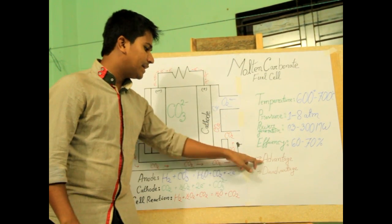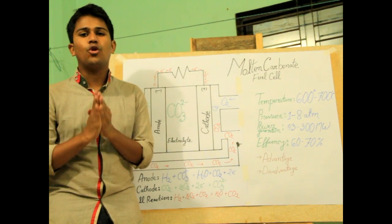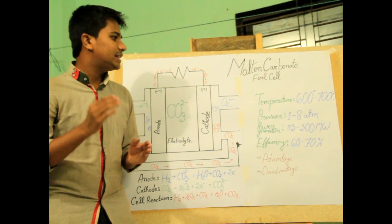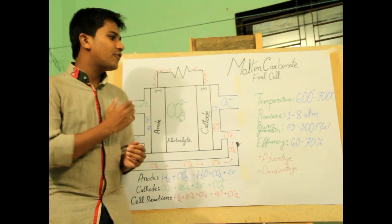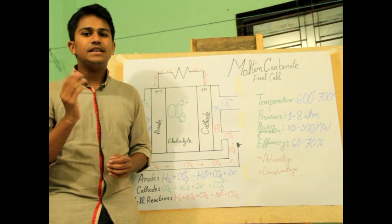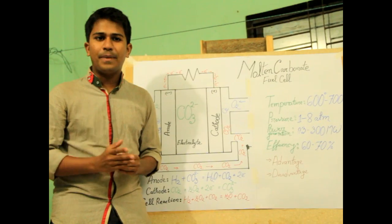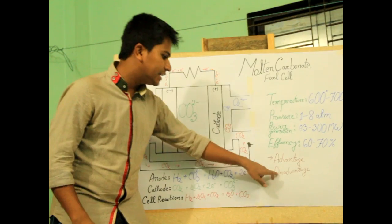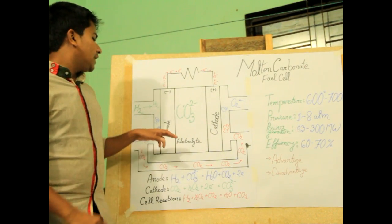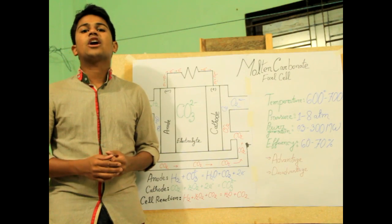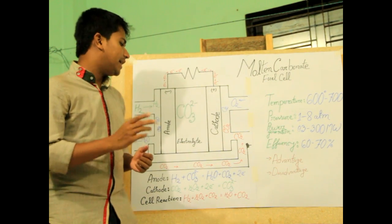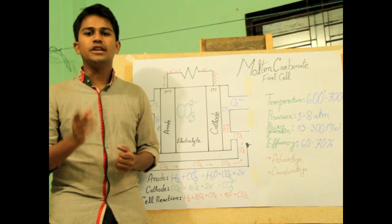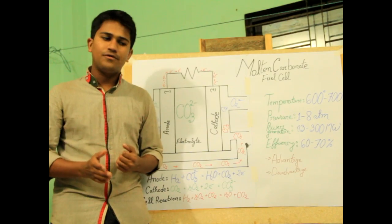Now, there are advantages and disadvantages. Definitely, there is no unmixed blessing on earth and no star can shine without darkness. The excess heat which we got from this fuel cell, whether it's effective or harmful, will depend on how you are handling it. Now, the disadvantages are: the electrolyte is a liquid so there is complexity in handling it rather than handling a solid electrolyte, and the excess heat will reduce the lifetime of the fuel cell.